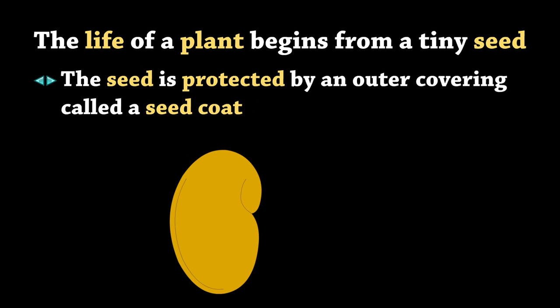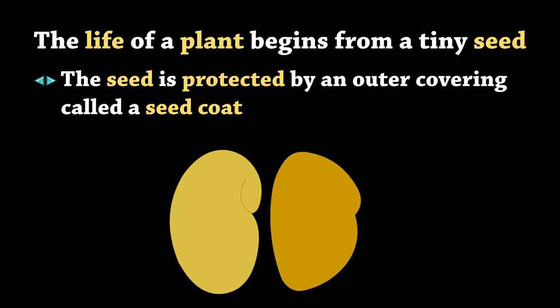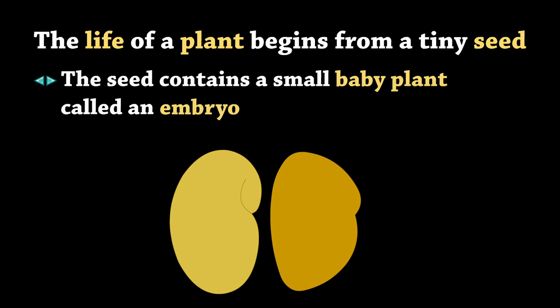The seed is protected by an outer covering called a seed coat. The seed contains a small baby plant called an embryo.